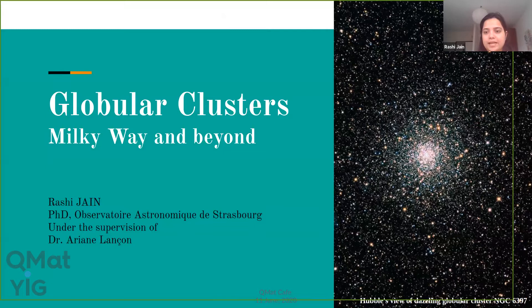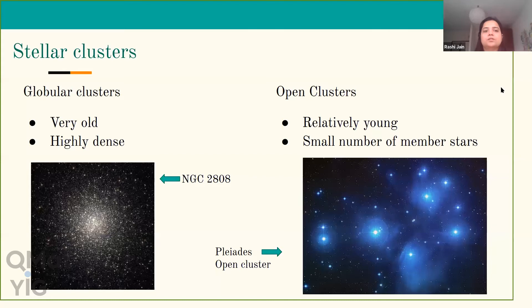In the slide, you can see an amazing picture of NGC 6397 taken from the Hubble Space Telescope. Starting with an introduction to star clusters — before going into why they're important, let me tell you what they are. Stellar clusters are a group of stars that are gravitationally bound to each other. Broadly speaking, they are classified into two main categories: globular clusters and open clusters.